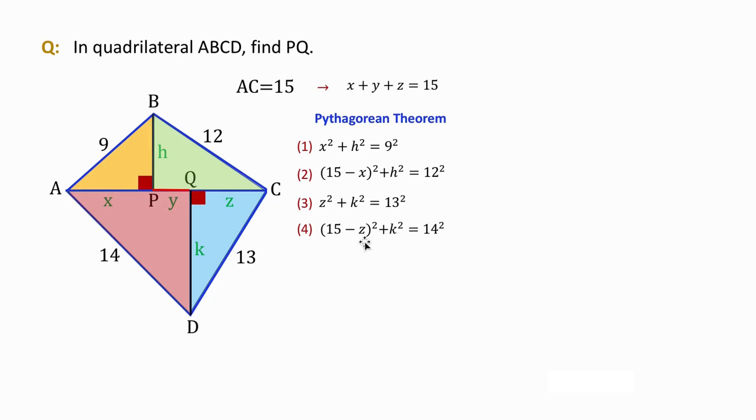So 15 minus Z is AQ for the triangle ADQ. So we have four equations, each for one of these right triangles.